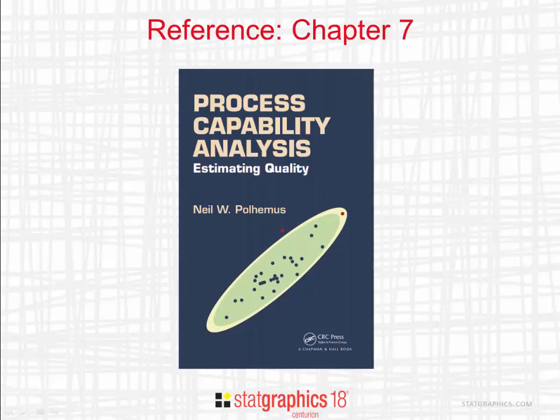If you'd like to read more about multivariate statistical tolerance limits, they're covered in Chapter 7 of my book, Process Capability Analysis: Estimating Quality, published by CRC Press.